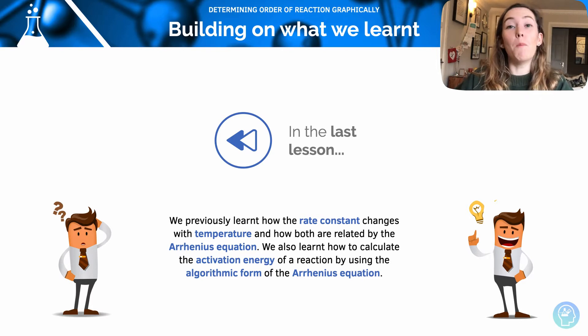In the previous lesson, we learned more about the rate constant. We also learned about the Arrhenius equation, how to rearrange it in order to find some unknown values.